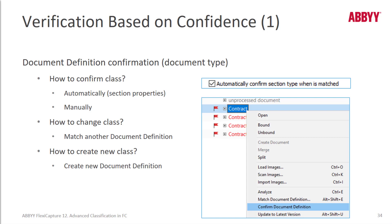Confirmation of class assignment can also be done manually using the command Confirm Document Definition from the right-click menu on the verification station. To change the class, the verification operator needs to match another document definition using the matchDocumentDefinition command.